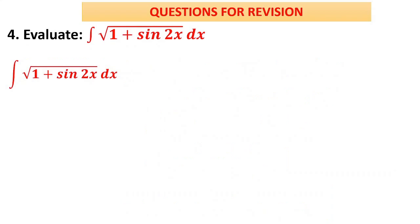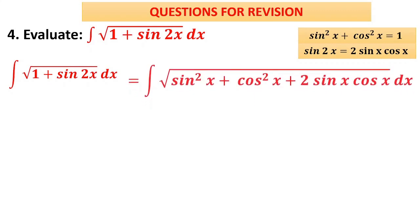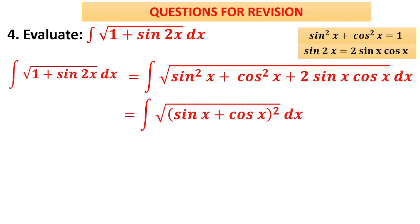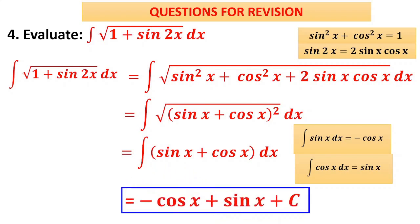Problem 4: evaluate ∫√(1 + sin 2x) dx. We have no direct formula for the square root of a function, so the priority is to remove the square root by making the expression inside a perfect square. Using sin²x + cos²x = 1 and sin 2x = 2 sin x cos x, the expression becomes sin²x + 2 sin x cos x + cos²x = (sin x + cos x)². Taking the square root removes the radical, giving ∫(sin x + cos x)dx = −cos x + sin x + c.